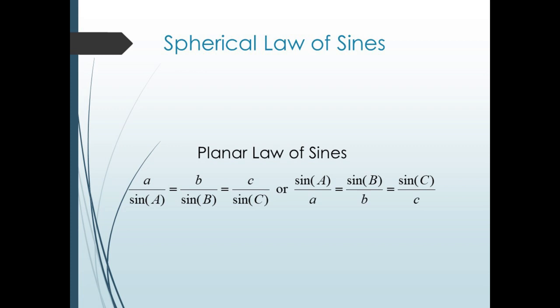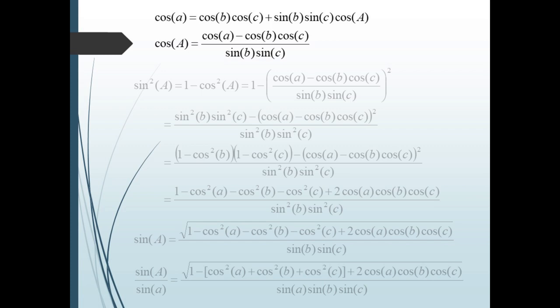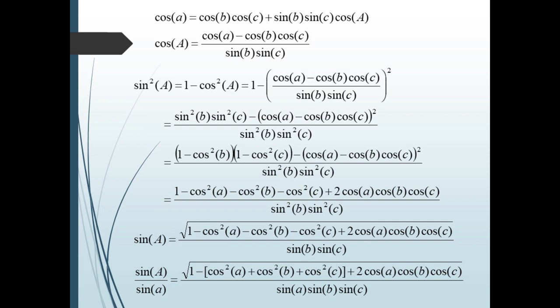Now for the law of sines. We'll again use our spherical law of cosines to help us derive the spherical law of sines. Starting with the first version of our law of cosines, we solve for cos A and plug the right-hand side into the standard trig identity sin²A = 1 − cos²A. Next, we get a common denominator and replace sin²b and sin²c with 1 − cos²θ. Multiplying this out and combining like terms, we take the square root of both sides and divide by sin a. We have: sin A / sin a = some expression.